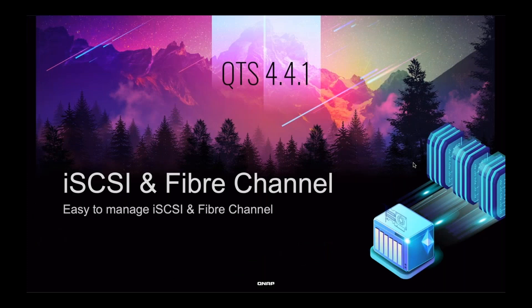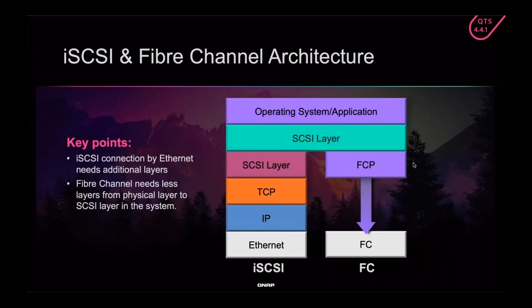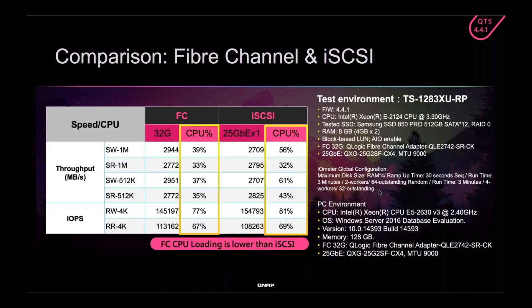To increase performance on your local area network, we now support Fiber Channel. Fiber Channel is great not only because it has a lot of bandwidth — up to 32 gigabit — but also because it does not have to go through as many layers to transfer data. Normally with iSCSI, you go through the SCSI layer, TCP layer, IP layer, and Ethernet. With Fiber Channel, it can bypass the TCP and IP layers, meaning fewer steps, less CPU load, and benefits to latency and overall throughput.